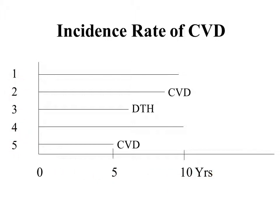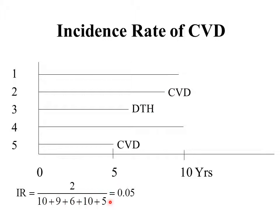Let's calculate the incidence rate for these five people over 10 years. The numerator is two — persons five and two both developed cardiovascular disease. The denominator is the total disease-free time: person one was disease-free for 10 years, person two for 9 years, person three died after 6 years so counts 6 years, person four was disease-free for all 10 years, and person five for 5 years — giving a denominator of 40 person-years. So we have 2 divided by 40.